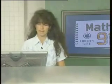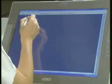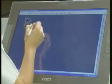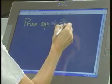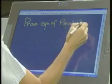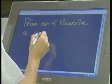It's true that the equation of the parabola is equal to y equals to negative x squared negative 4. Prove that the equation of the parabola is y equals.